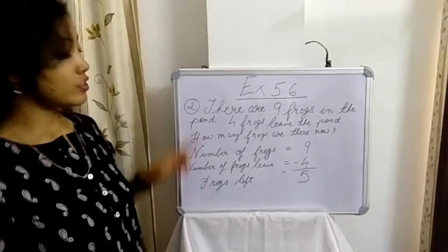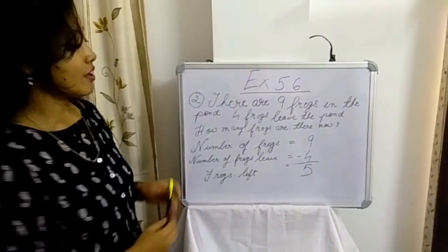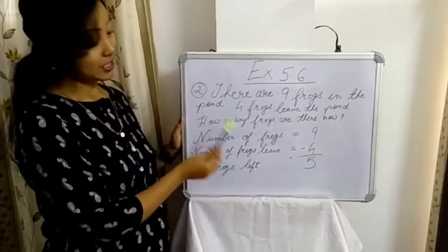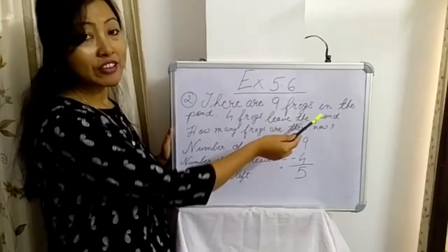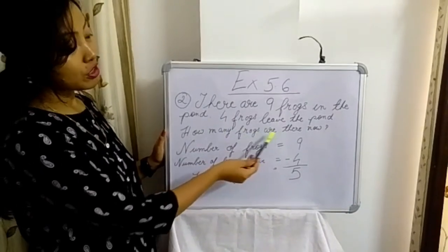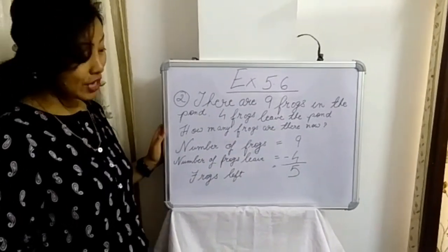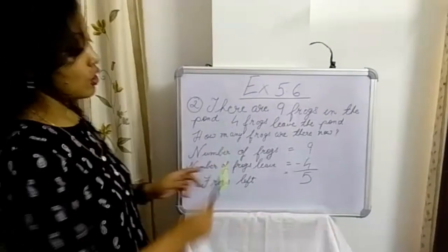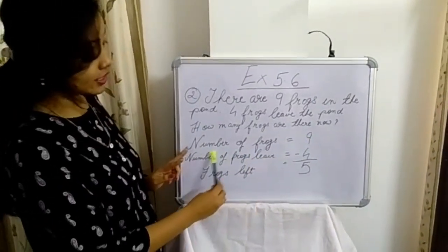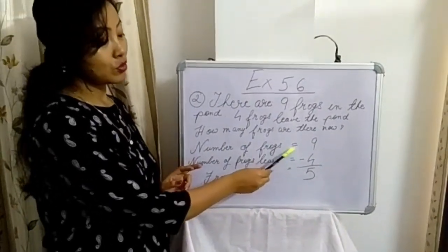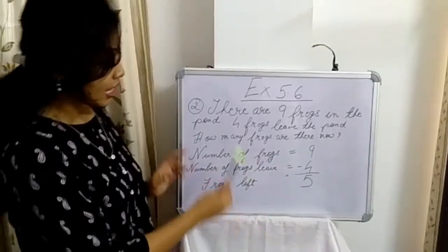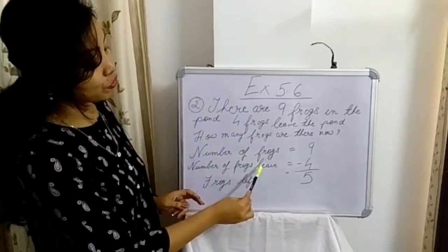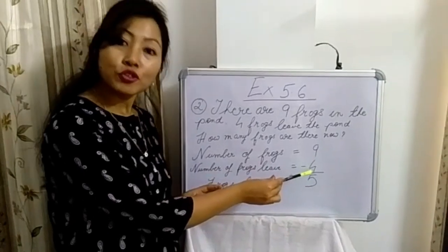Next is question number 2. There are 9 frogs in the pond. 4 frogs leave the pond. How many frogs are there now? So in this question, total frogs were 9. That is, number of frogs equals to 9. And from the 9 frogs, number of frogs that leave is 4.